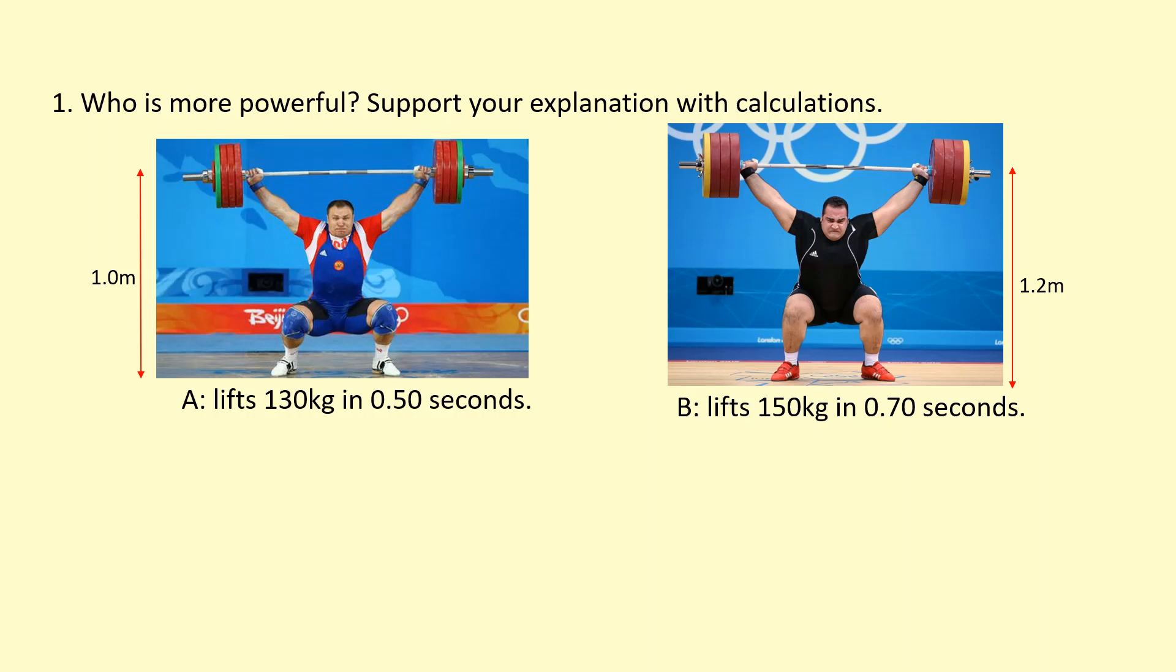Which of these weightlifters is more powerful? The guy on the left who lifts 130 kilograms up 1 meter in 0.50 seconds, or the guy on the right who's lifting a heavier mass, 150 kilograms, up a higher height, 1.2 meters, but takes a bit longer, 0.70 seconds.